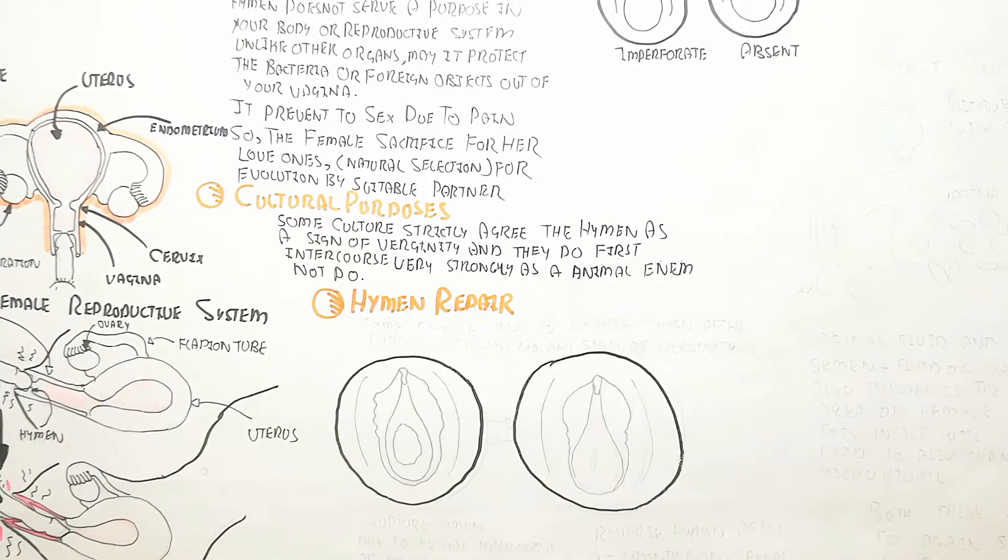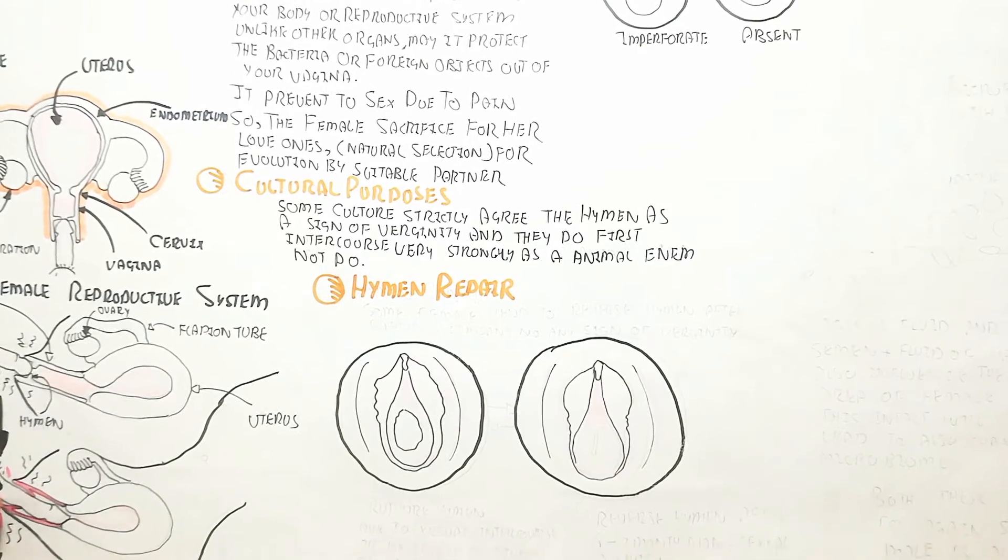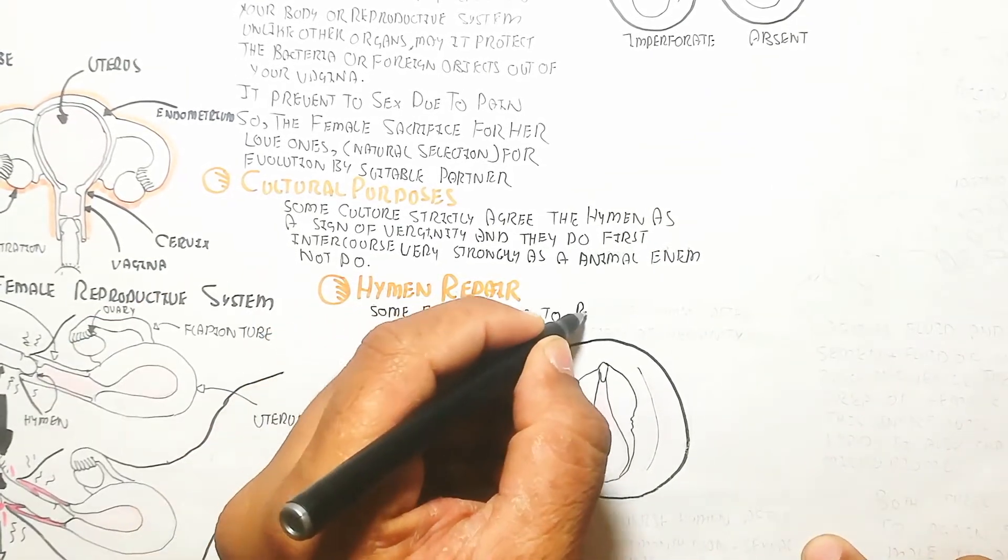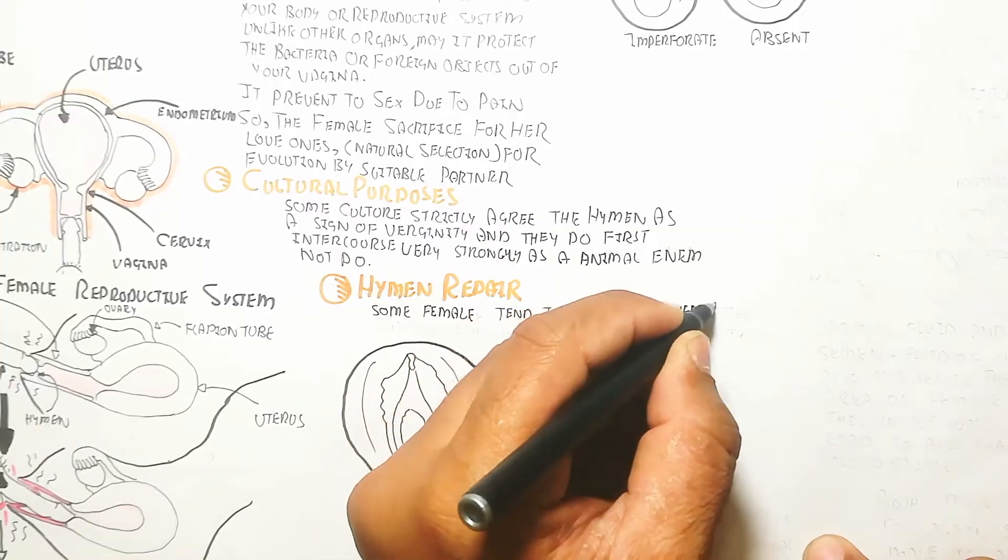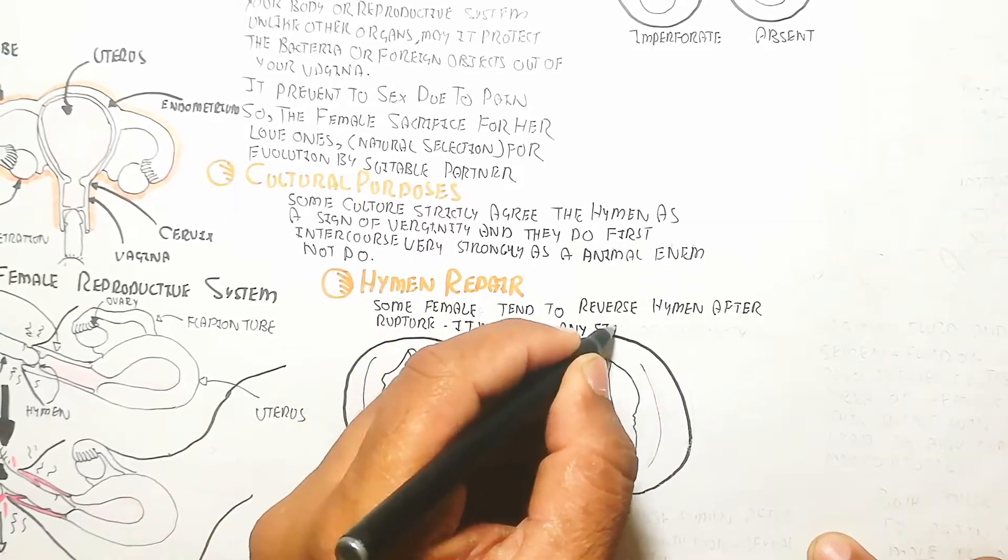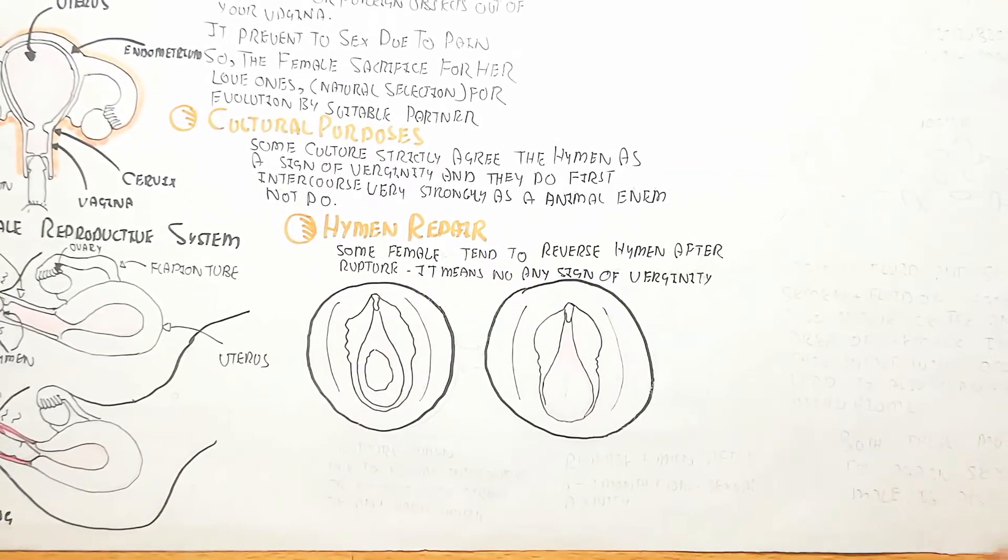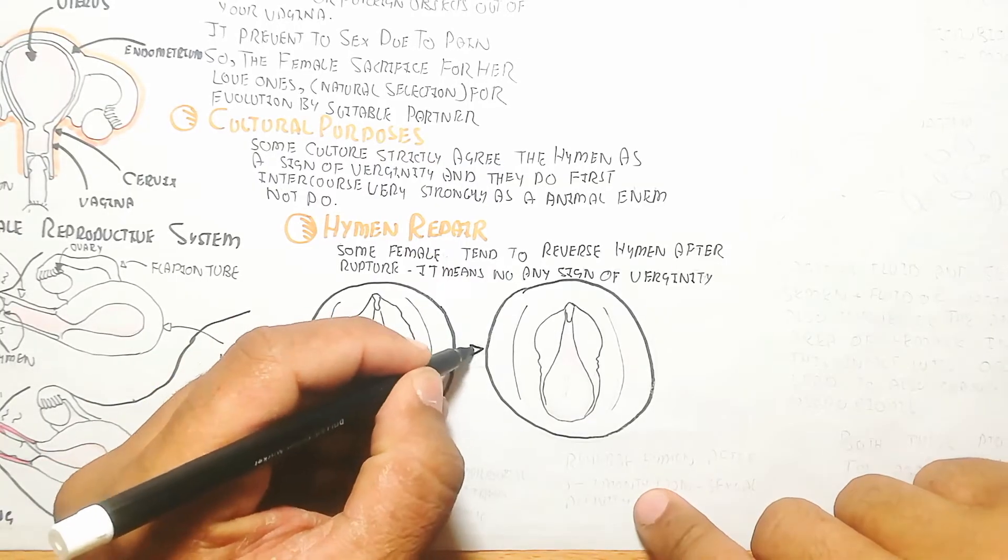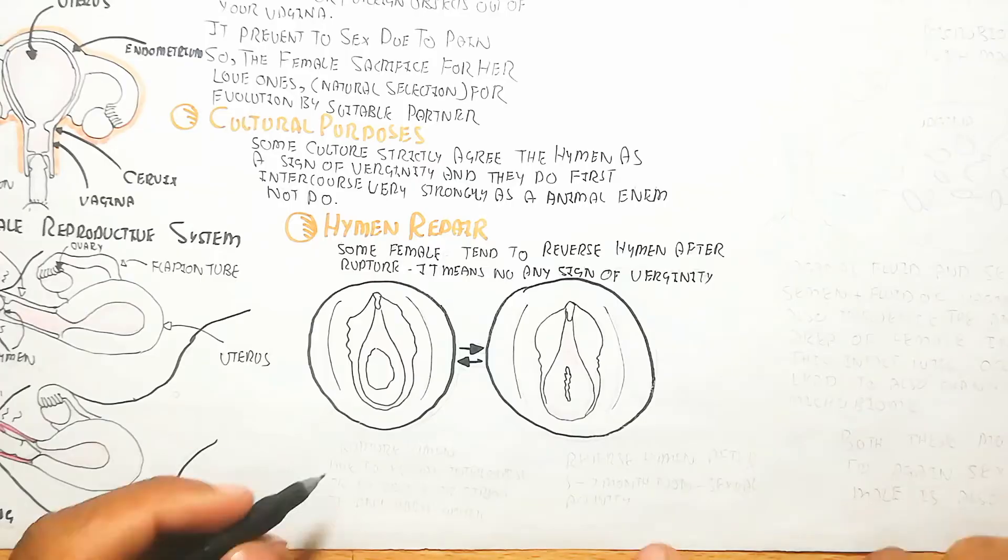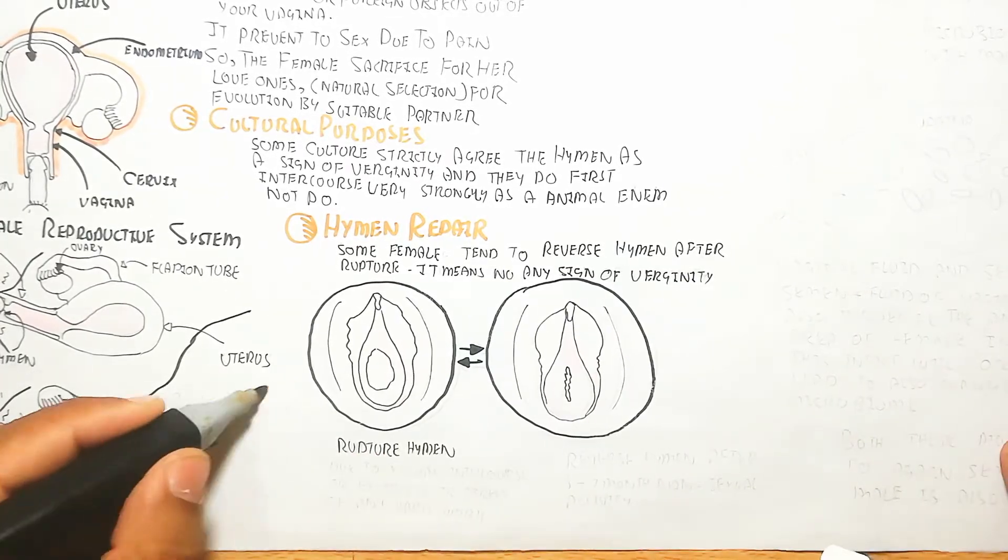Sometimes the doctor can perform a procedure called hymen repair. Some females tend to reverse hymen after rupture, which means no sign of virginity. Virginity does not depend solely on the hymen because ruptured hymen can be reversed.